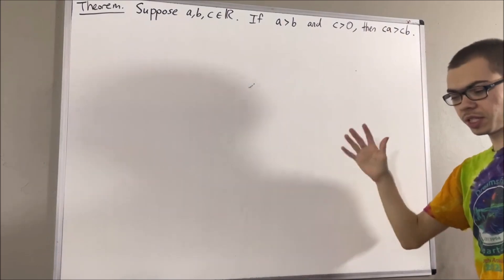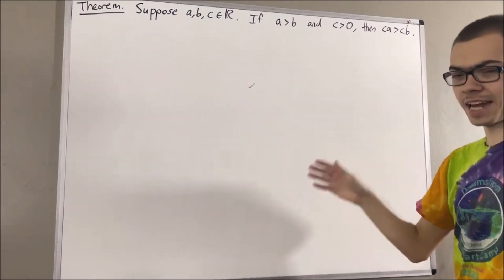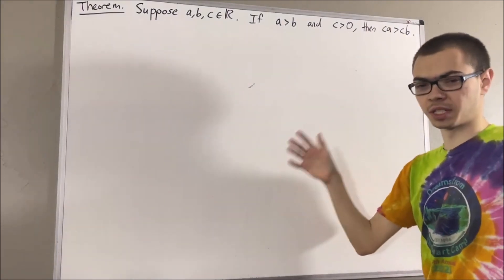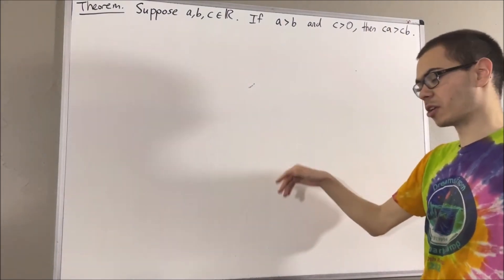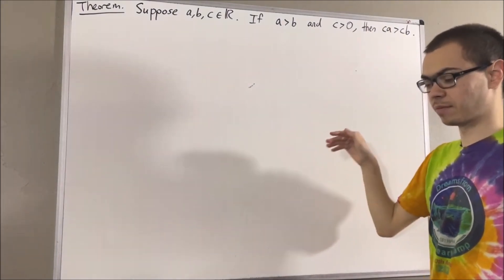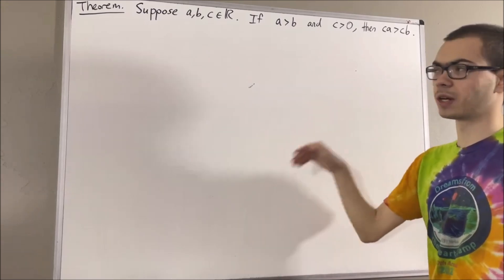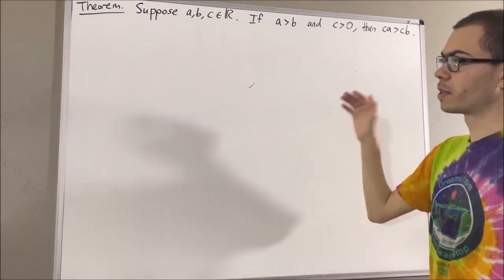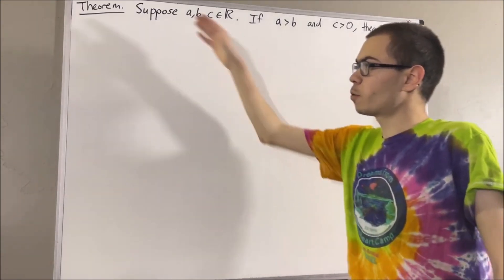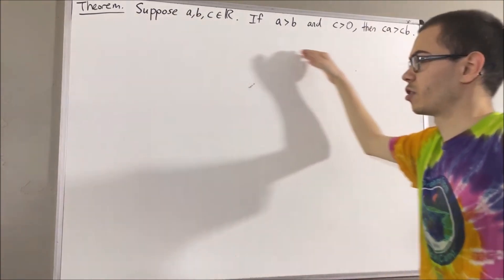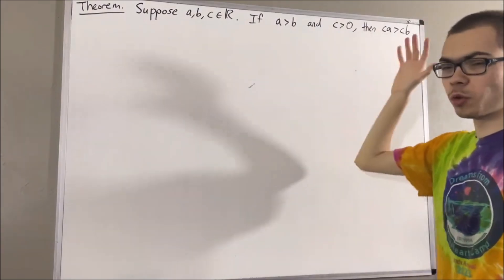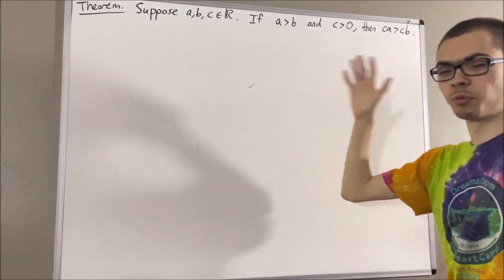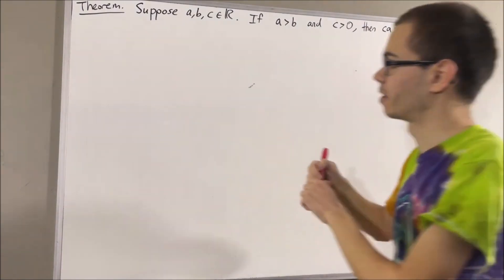Now, in this series, we are using a list of 10 axioms for the real number system, and I'll leave that list of axioms in the description below. Before we get into proving this theorem, we are first going to prove the following preliminary result.